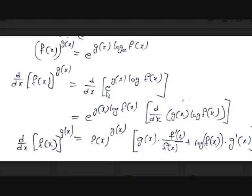To differentiate this, we use the chain rule, because e to the power of some function requires chain rule. Differentiating, we get e^(g(x)·log f(x)) — the same expression — because the derivative of e^x is e^x. Then, applying chain rule, we also differentiate the inner term g(x)·log f(x).